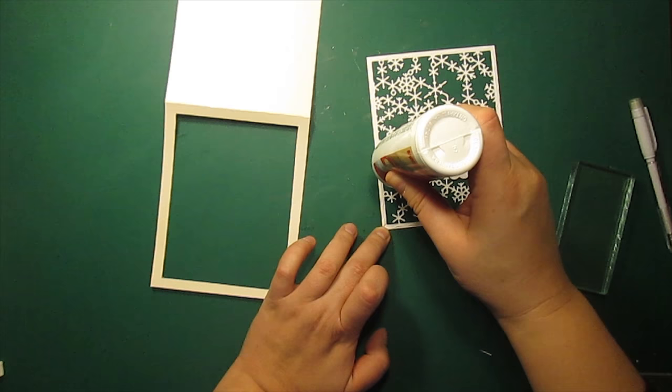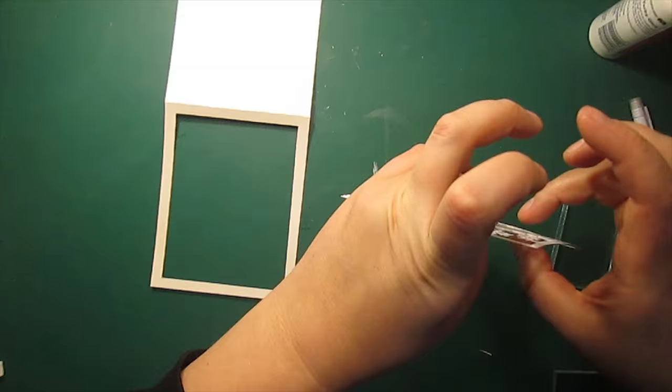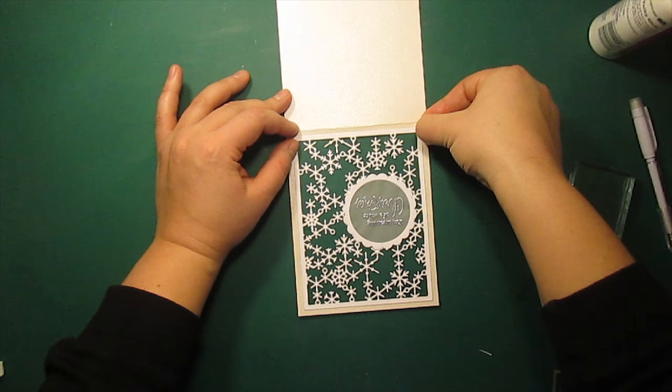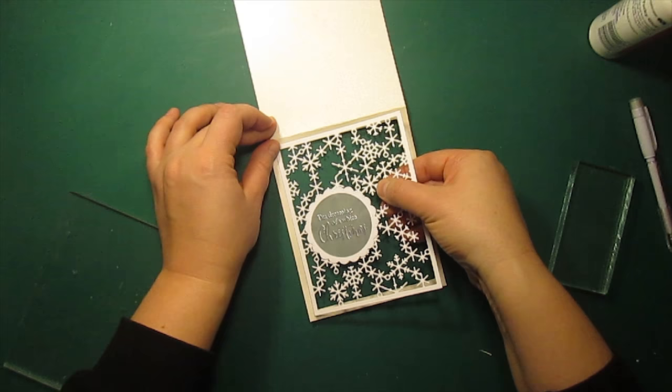Now I'm applying my liquid glue around the perimeter of the snowflake frame and sticking it to the card base. The nice thing about liquid glue is that you can reposition the die cut before the glue dries. And now you see that I have placed the panel upside down, but luckily I've noticed it before it was too late.